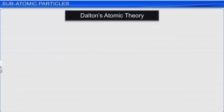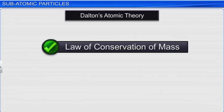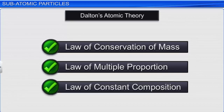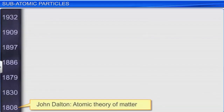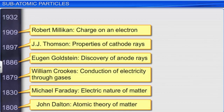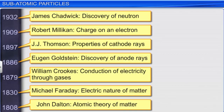Compounds are formed from atoms of the constituent elements. Dalton's atomic theory was able to explain the laws of conservation of mass, multiple proportion, and constant composition. However, it could not explain the results of many experiments conducted by scientists in the later part of the 19th century and 20th century.